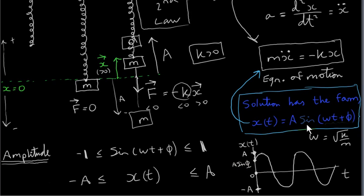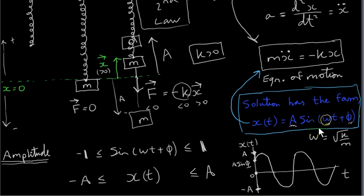In the next video, we will look at a particular example of a sinusoidal function — giving specific values to A, omega, and phi — and examine a graph to understand the meaning of omega.